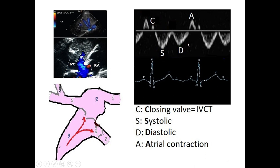Now let's look at pathological changes. Starting with the A wave: since it represents atrial contraction, in atrial fibrillation we lose the A wave entirely. In contrast, any situation with resistance to blood flow from the right atrium to the right ventricle will produce a prominent A wave.